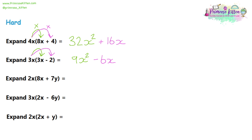Moving on to question three: 2x(8x + 7y). Set up the arrows. Green arrow first — numbers: 2 times 8 is 16, then letters: x and x gives x squared, so 16x². Then the pink arrow — numbers: 2 times 7 is 14, then letters: we have an x in the question and a y, so we write 14xy. Split it into two parts — a numbers section and then a letters section.